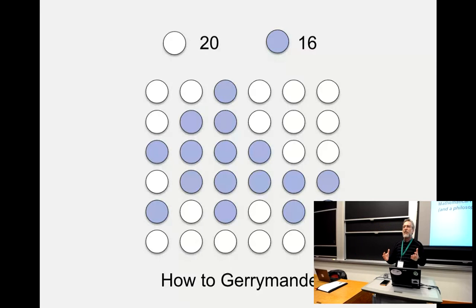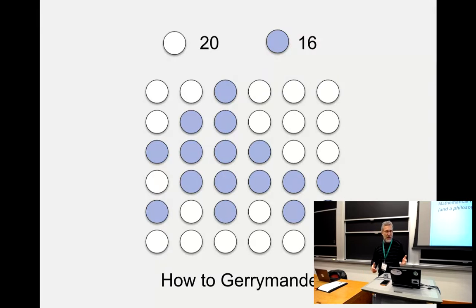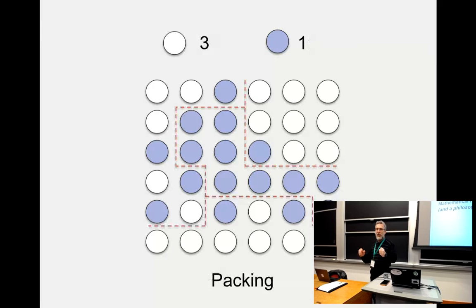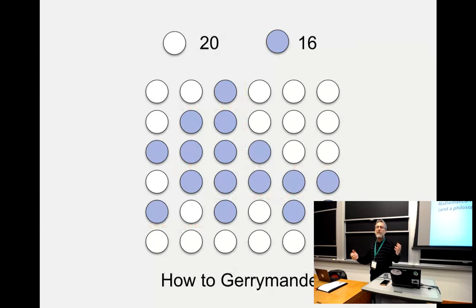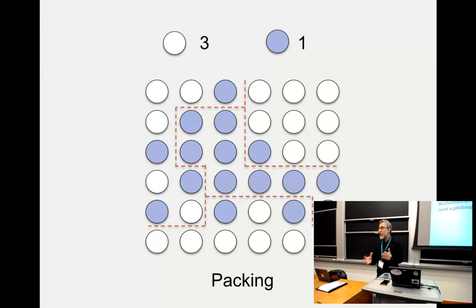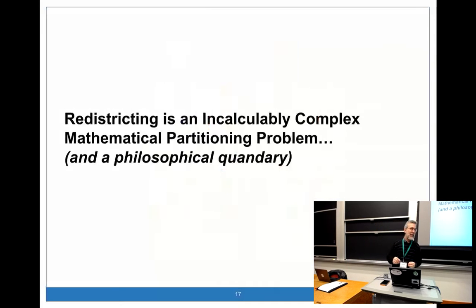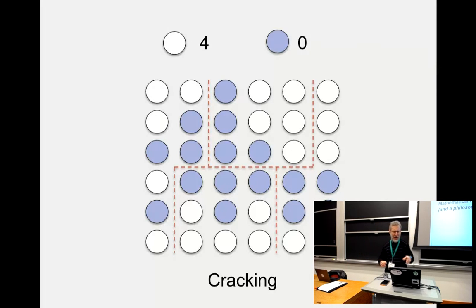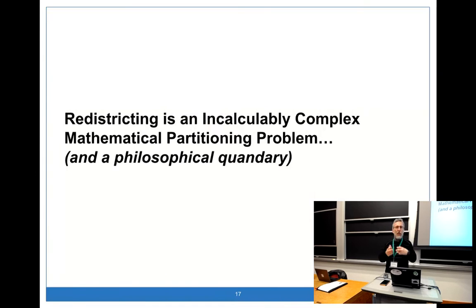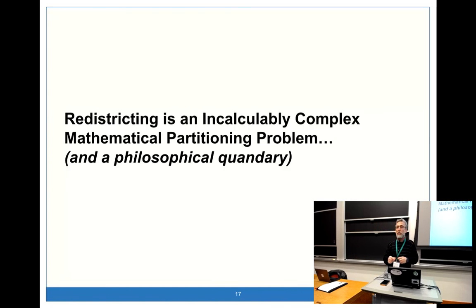The number of ways you can divide a map into districts grows exponentially in the number of census blocks you have to divide. And solving this for even simple things like keeping population balanced and keeping the districts contiguous turns out to be NP-hard. That doesn't mean we can't do it, but finding the optimal solution is not generally tractable unless P equals NP.